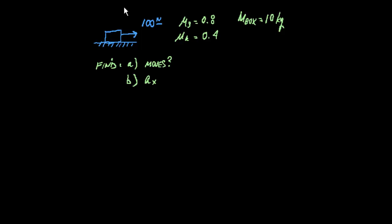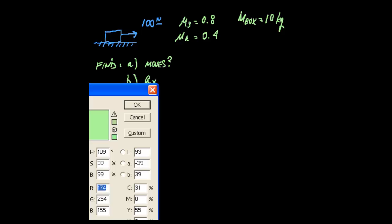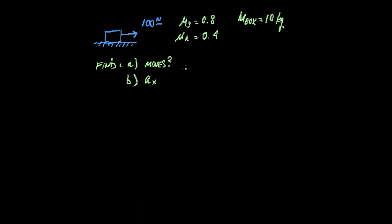So we're going to pull this box to the right, or try to. We know there is friction present because I've given you some coefficients for friction right here. Just get a little different color. Right here, we've identified some coefficients of friction.